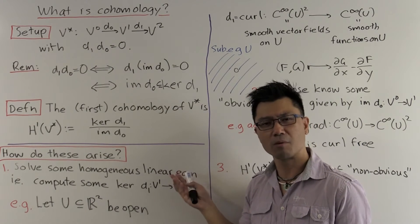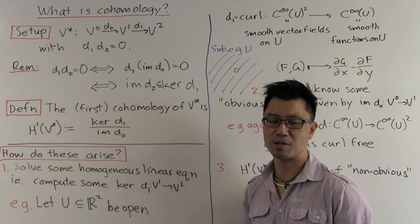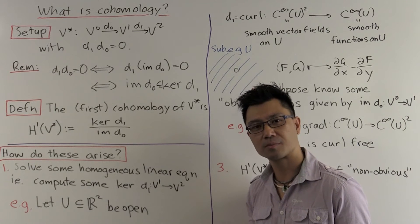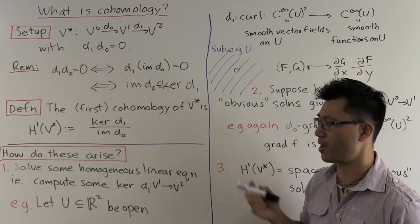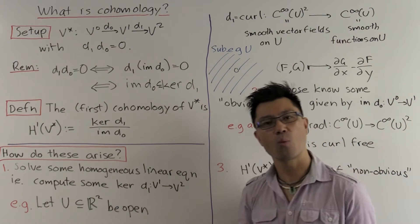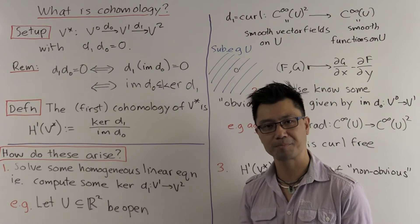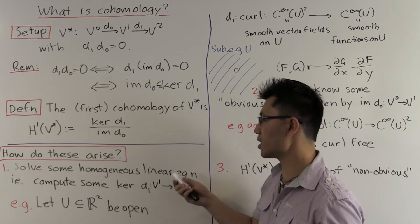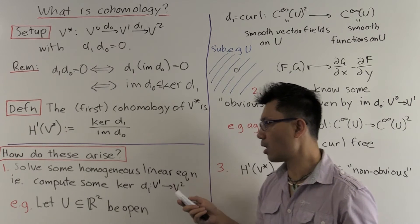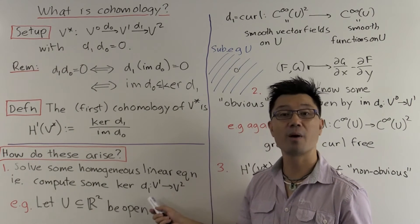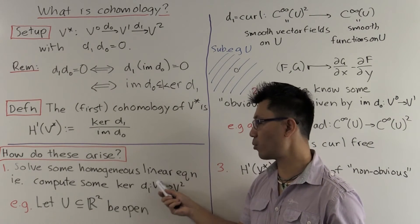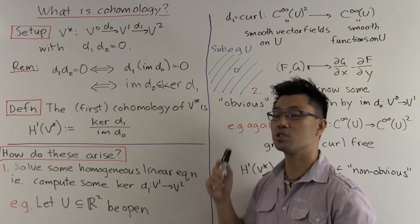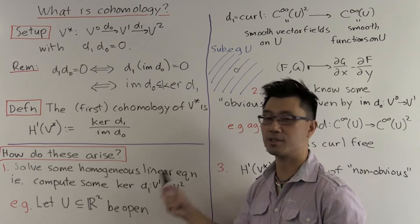OK, so you may think, well, that's a rather strange looking gadget. How do these arise in nature or in mathematics? Well it turns out that they kind of crop up everywhere. And one way to say why that's the case is the following. Suppose you want to solve some homogeneous linear equation. Suppose the linear equation is given by the linear map D1, from V1 to V2.